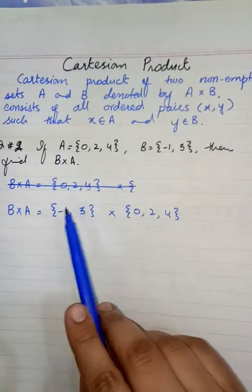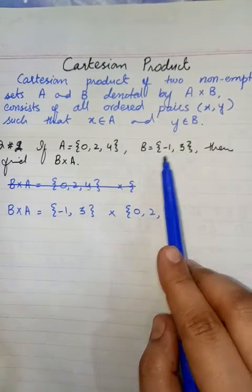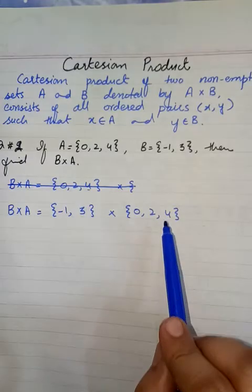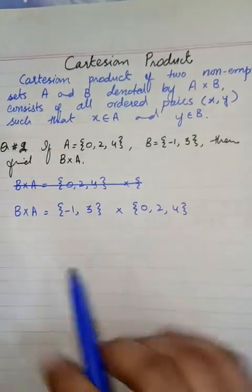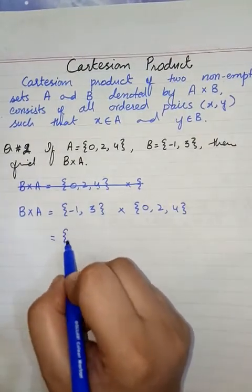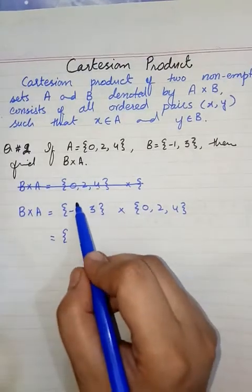First we have to write elements of B which is given, then multiply, then element of A. Now let's start. How can we multiply this? Make ordered pairs.